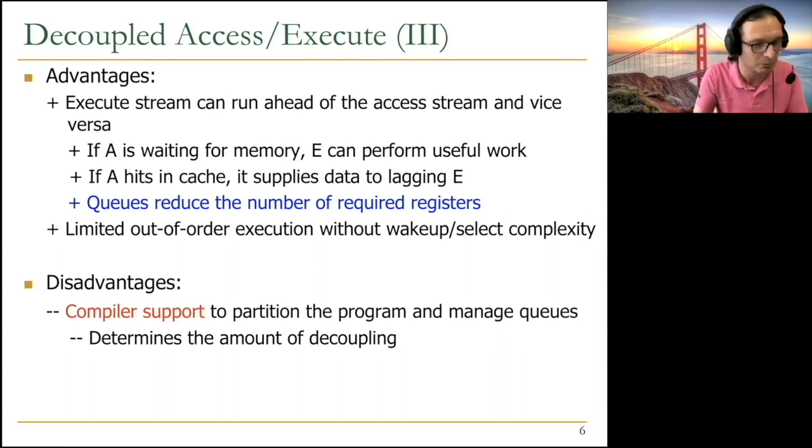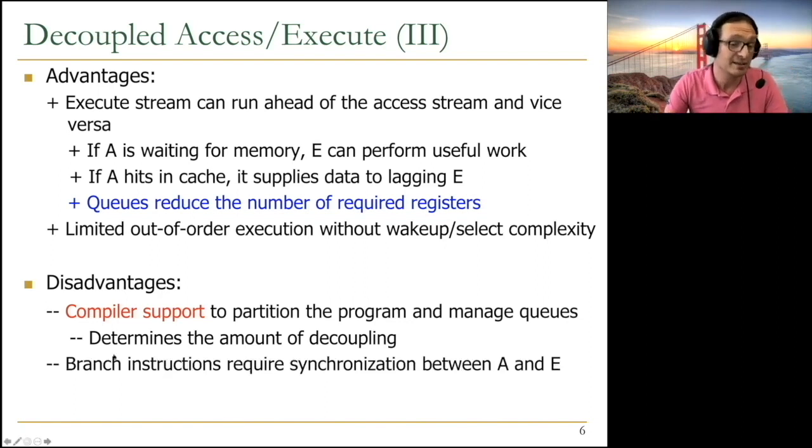Not as much as VLIW has done. And not as much as work that's going on in systolic arrays today, actually. But still, compiler is important. And one other disadvantage is branch instructions require synchronization between A and E. Because you're actually taking a single instruction stream and separating it into two instruction streams. What happens to branches? They get executed in the execute processor. But you need to signal the access processor to make sure that the access processor is not on the wrong path forever.